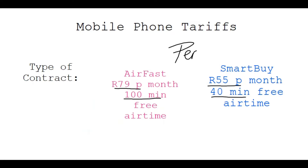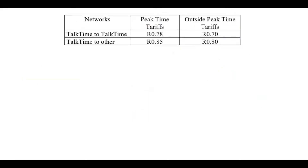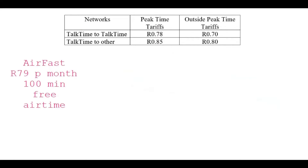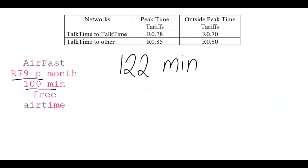You must keep that in mind: for the whole month you only get those free minutes, and after those 40 minutes you have to pay for every extra minute you call. I'm going to work through an example using the Airfast option, where you pay 79 rand per month and get 100 free minutes. In my example, I used 122 minutes total for the whole month — only phoning Talk Time to Talk Time on the same network, and only during peak time tariffs.